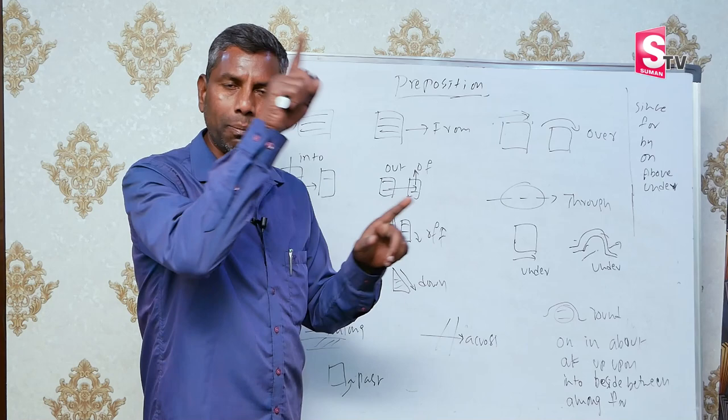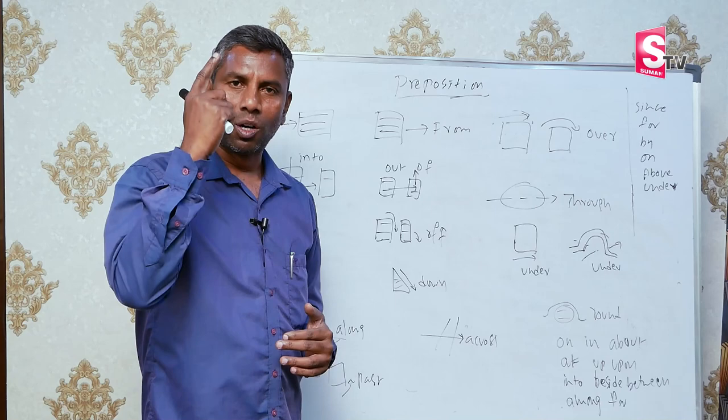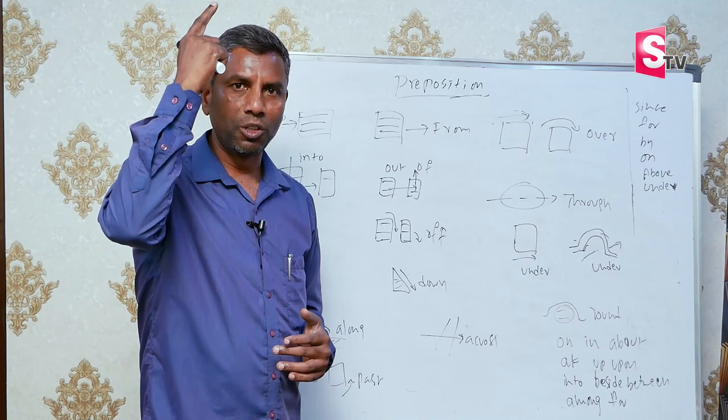But, over. Over means above. The cat is sitting over the wall. The fan is above. Above means above and over again. The fan is above my head. The fan is over my head. That means I am going to touch easily.